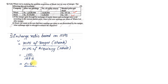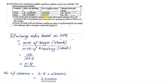After finding the exchange ratio, we need to find the new number of shares that Whale will be giving away to Shark. The formula is: new number of shares = exchange ratio × number of shares of the target company. The target company Shark had 2 lakh 50,000 shares, so new number of shares = 0.8 × 2,50,000 = 2 lakhs.